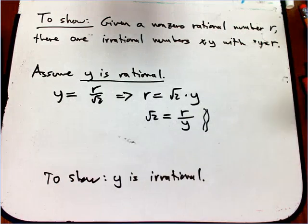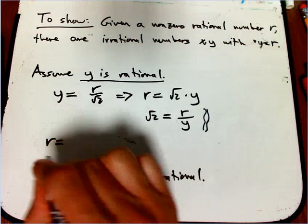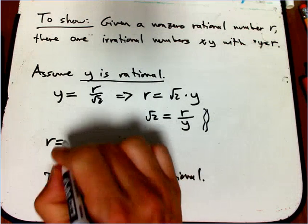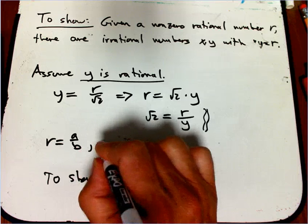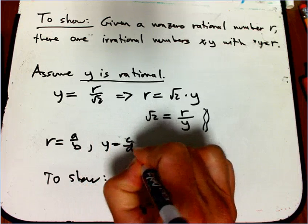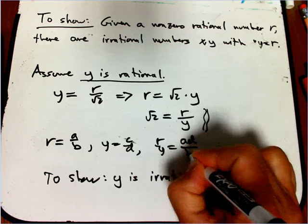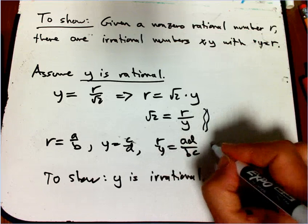Well, actually, let's prove it. We know by definition, R being rational is R is A over B, where those are integers, and Y is C over D. And so R over Y is going to be AD over BC, if you do the calculation, and that is rational.